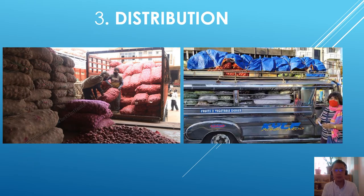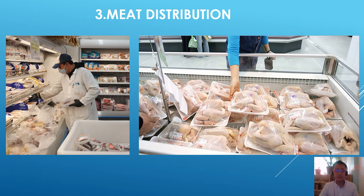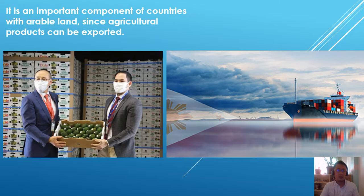The third step is distribution — this is the method by which our agricultural products are able to reach consumers. You can see this in the local market setting. This is also an example of meat distribution, properly packed, as found in grocery stores. Agribusiness is an important component of countries with arable land, since agricultural products can be exported.